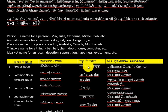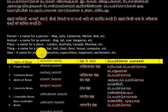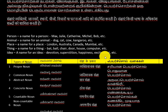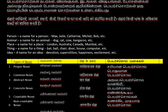The name of a place — such as London, Australia, Canada, or Mumbai — is a noun. For things, names like a bat, a ball, a chair, a door, a house, or a computer are nouns.